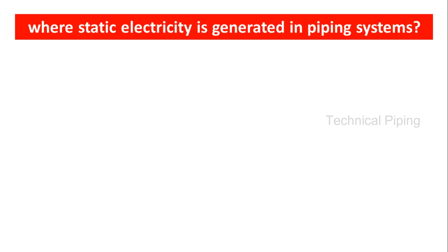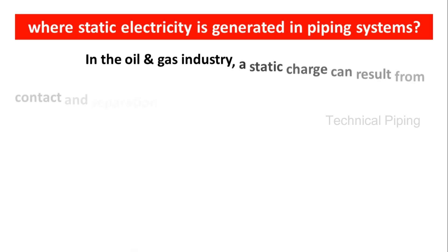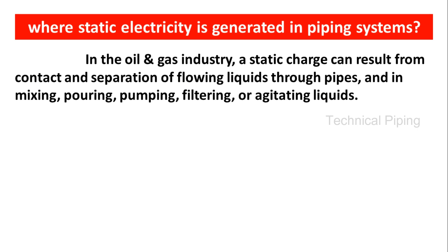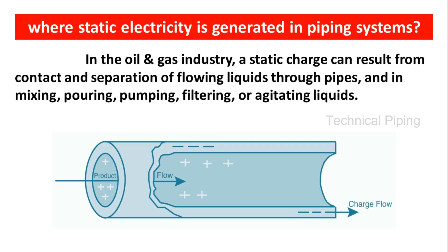Which are the places static electricity is generated in piping systems? In the oil and gas industry, a static charge can result from contact and separation of flowing liquids through pipes, and in mixing, pouring, pumping, filtering, or agitating liquids. In this example, the liquid is positively charged and the pipe is negatively charged.